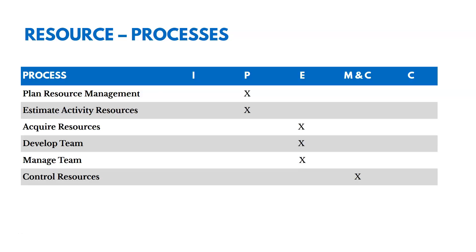There are six processes in this chapter. Two are in planning: plan resource management and estimate activity resources. Three are in executing: acquire resources, develop team, and manage team. And then control resources is in monitoring and controlling.